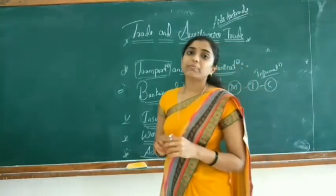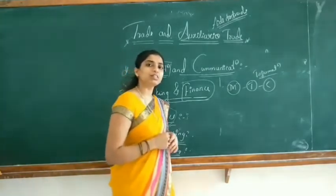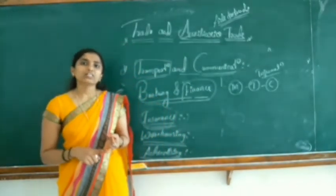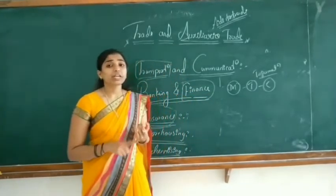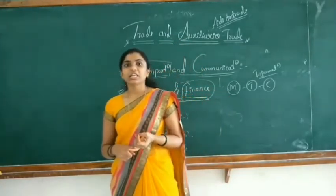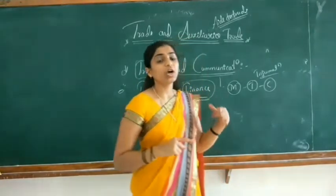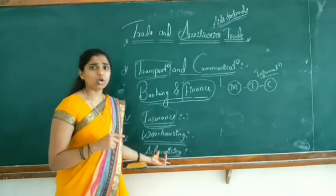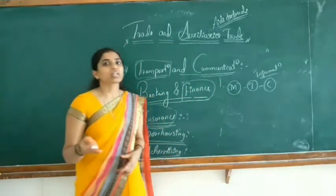I hope you are clear about the concepts of trade and auxiliary to trade. Today we discussed what trade is — it means selling of goods and services, whether by sale, transfer, or change of ownership. The different types of trade are internal trade and external trade. Internal trade has two types: wholesale and retail. External trade consists of three types: import, export, and entrepot. Auxiliary to trade includes transportation, communication, banking and finance, insurance, warehousing, and advertising. We will move to the next concept in the next class. Thank you.